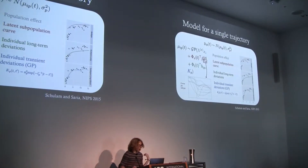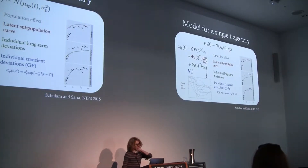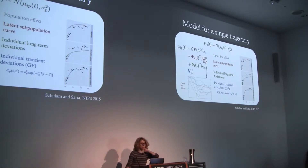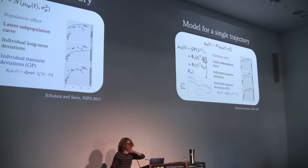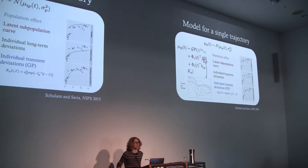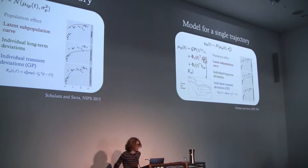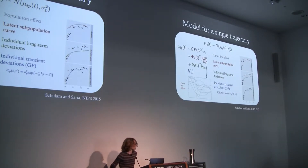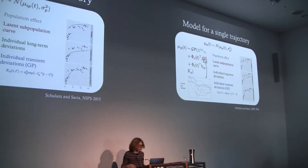We became interested in whether we can do better than this threshold approach. Can we use some kind of trajectory model for each patient and use that trajectory model to predict what their EGFR or other values are going to look like out into the future? One of the things we use to do this is Gaussian processes, which make good trajectory models — essentially longitudinal regression.